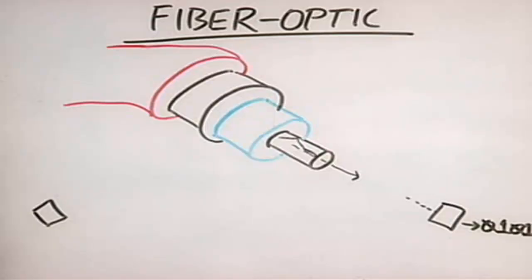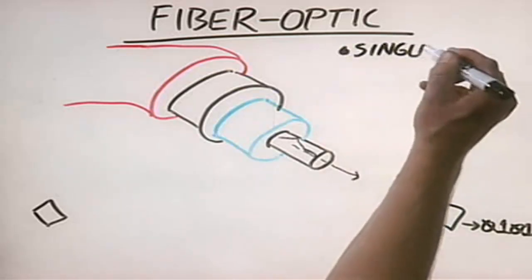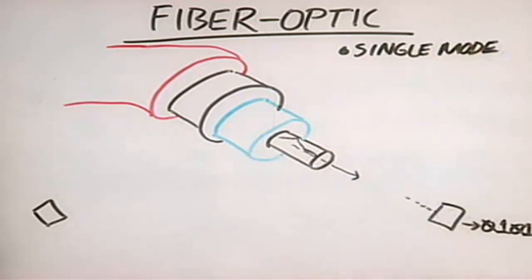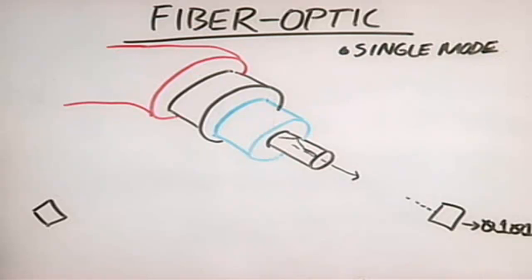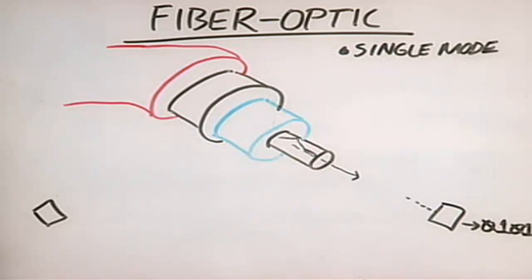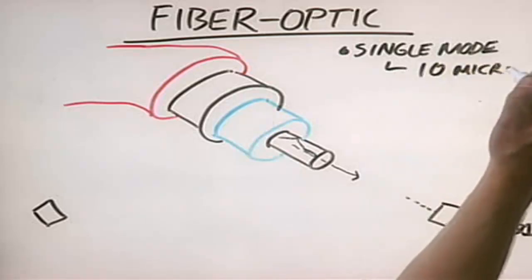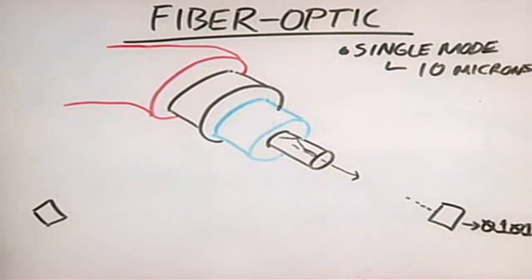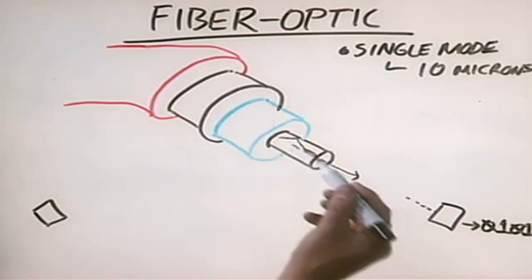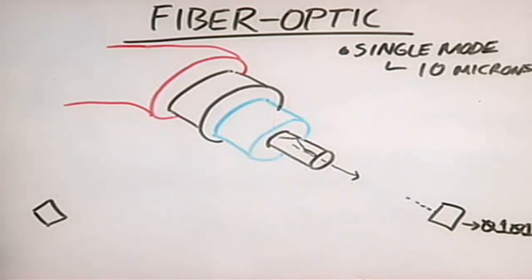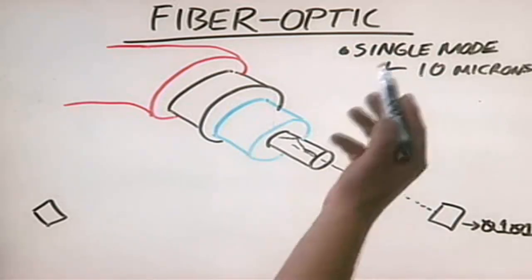Just as with coaxial and twisted pair, there are different types of fiber optic cable. The first type is called single mode. Single mode fiber optic cable transmits light as a single ray — we call that ray a mode. Single mode is used for very long data transmissions and has a very thin core, about 10 microns in diameter. Because of the way it's constructed, the light stays in the center of the core without bouncing around much, allowing very long cable runs and very high data transfer rates. Single mode is also the most expensive type.